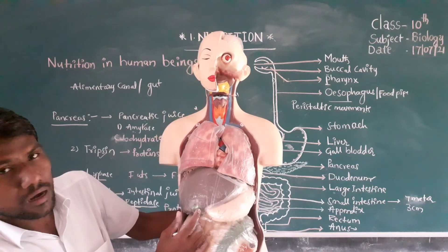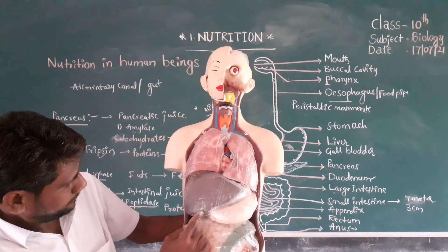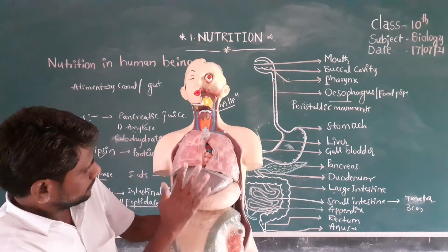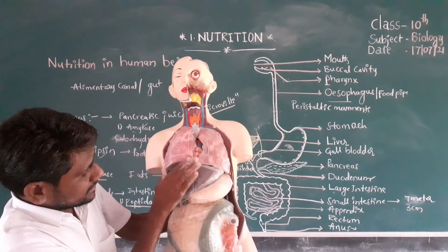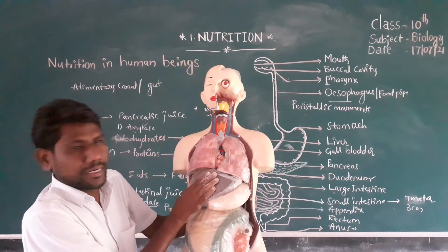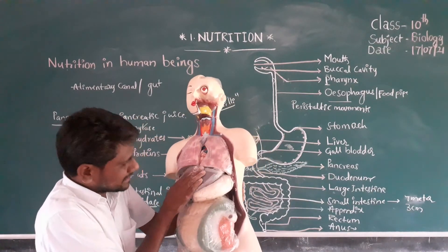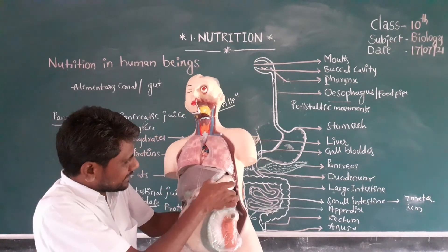This is the gallbladder. This is the liver — the largest gland in the human body and it is a mixed gland.